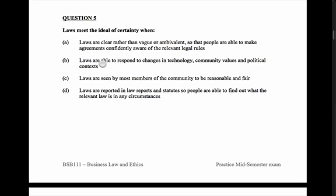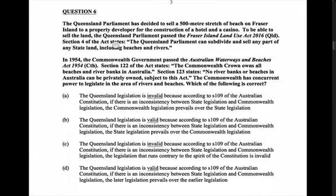Laws are able to respond to changes in technology, community values, and political context — that's a different ideal of law, that would be flexibility, not certainty. Laws are seen by most members of the community to be reasonable and fair — no, that's fairness or justice. Laws are reported in law reports and statutes so people are able to find out what the relevant law is — that's accessibility, not certainty. So A is our answer here: certainty.